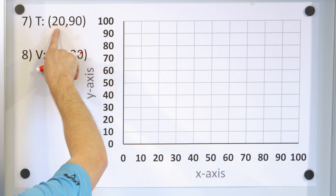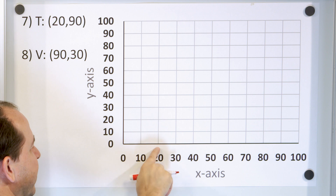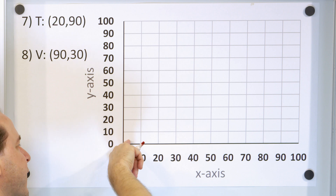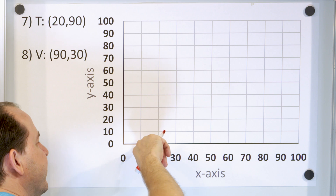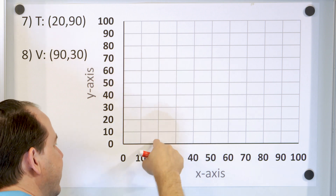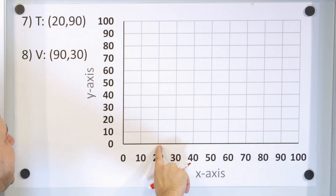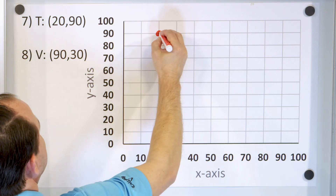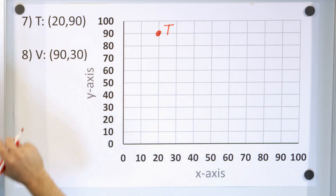Here we have point T at 20 comma 90. X is 20, so we go over to 20 on the x-axis. Notice I'm counting by 10s, but all numbers are still there between the tick marks. I'm looking for x equals 20 and y equals 90, so I go up until I see a y value of 90. The point is right here, labeled T. X value of 20, y value of 90.